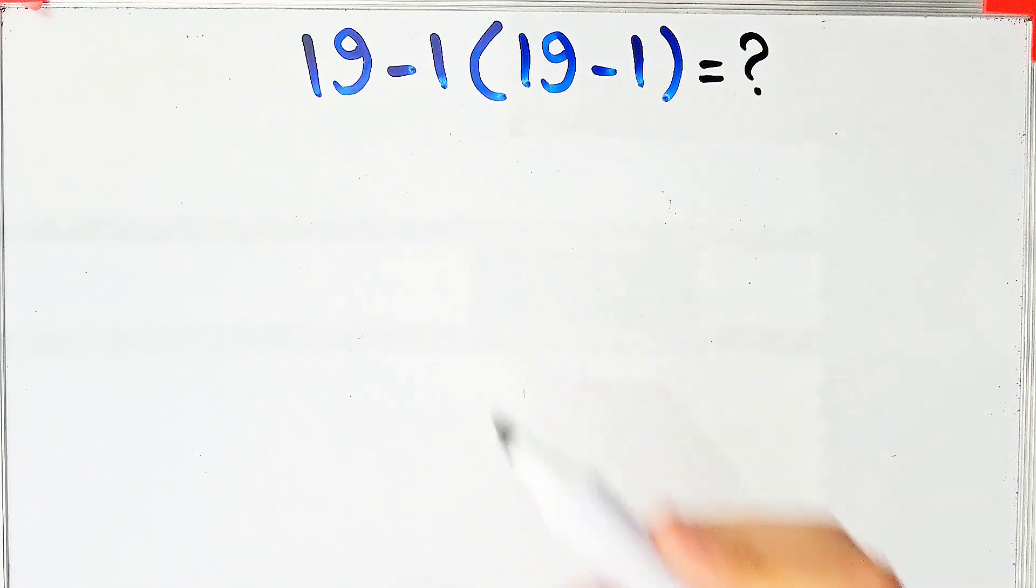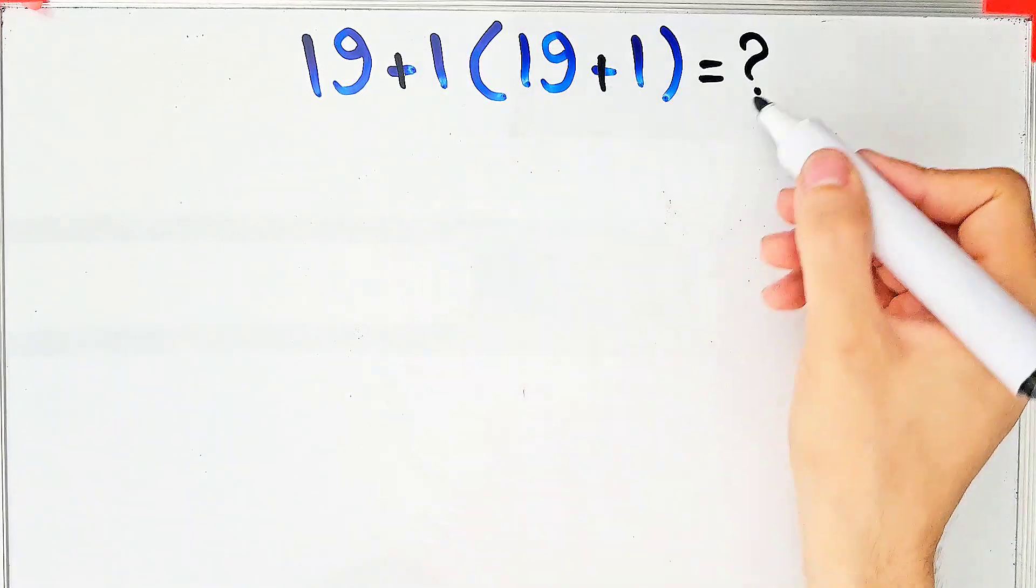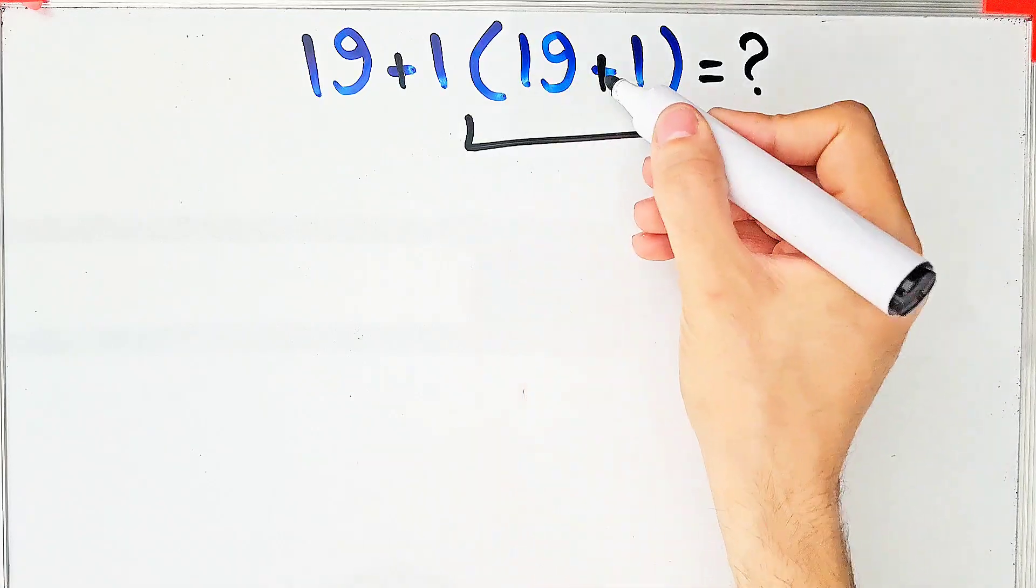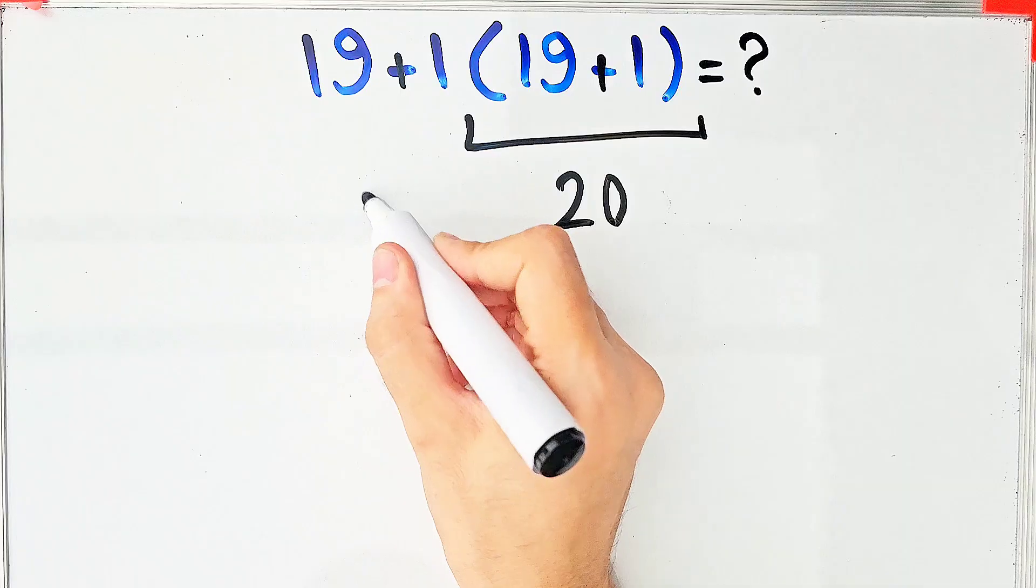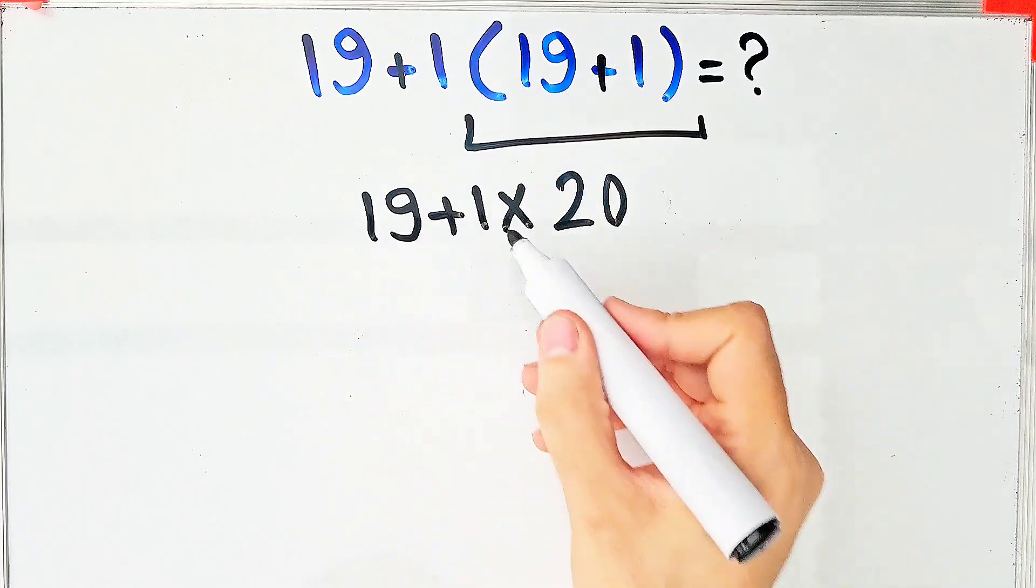Okay guys, what would the answer be if we change these subtraction signs with plus signs? Let's solve it step by step together. Again, we simplify these parentheses. We have 19 plus 1, which equals 20. Now we have 19 plus 1, then times 20.